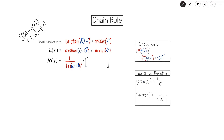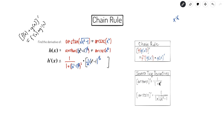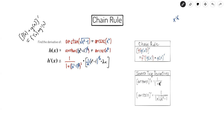The chain rule says: derivative of the outside — in this case the outer function is x to the one half power, whose derivative is one half x to the negative one half power — but we're plugging in the inner function. So we get one half times x squared minus one to the negative one half power, times the derivative of the inside. Using the power rule, the derivative of x squared is 2x and the derivative of negative one is zero, so it's times 2x. All of this is just the derivative of the first term — we had to use the chain rule twice, because x squared minus one was inside x to the one half, which was inside arctangent.